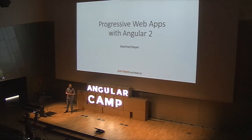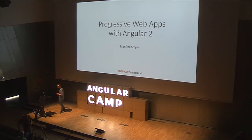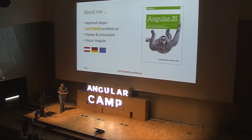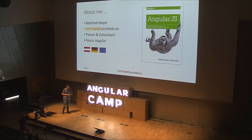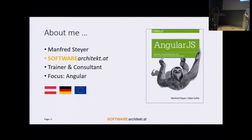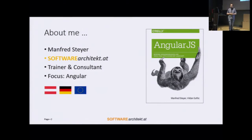As mentioned, my name is Manfred Steyer and I will talk about progressive web apps in the next 30 minutes. I am a trainer and a consultant and I live in Austria and also work in Germany. From time to time I'm writing — my last book has been about AngularJS.